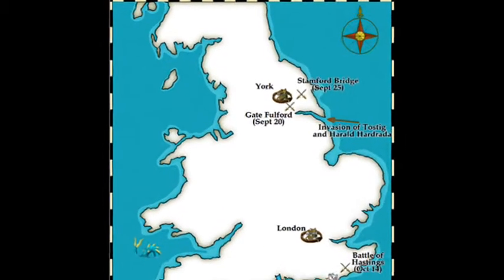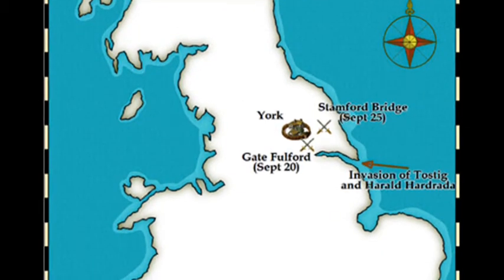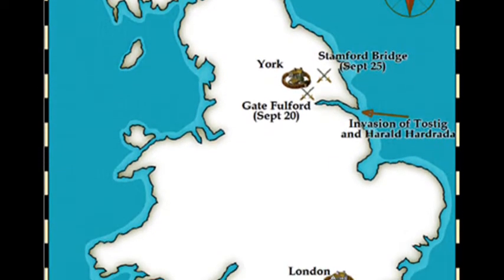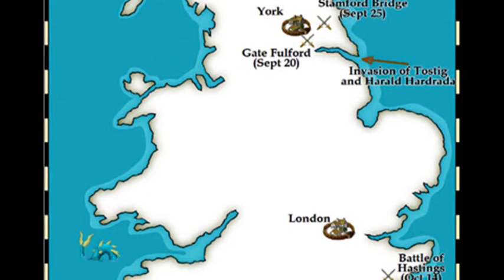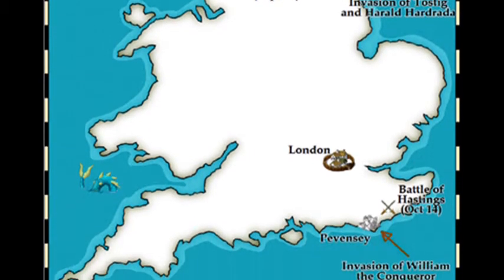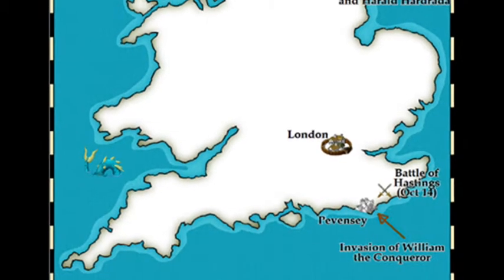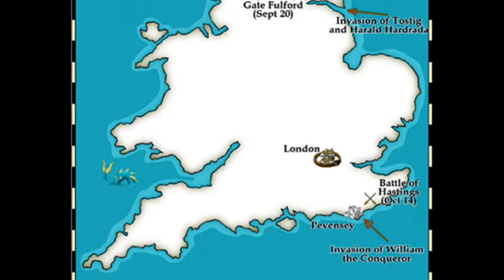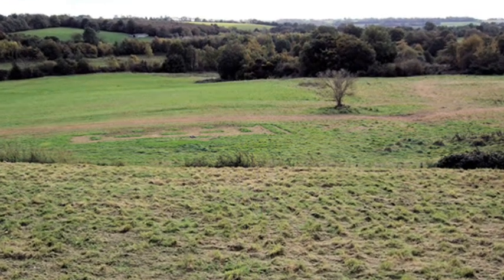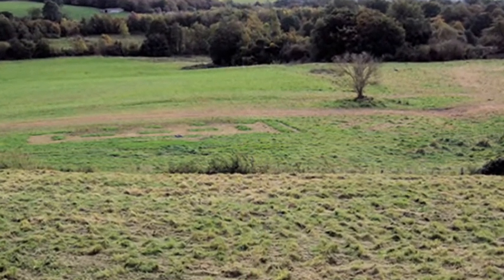Conscious of an imminent Norman invasion, Harold was forced to immediately march his battered and depleted army south again. On this exhausting journey, the soldiers had to cover an average distance of 27 miles a day. Having received news of William's arrival on the way, Harold arrived at the battleground and took up a defensive position on top of Senlac Hill.